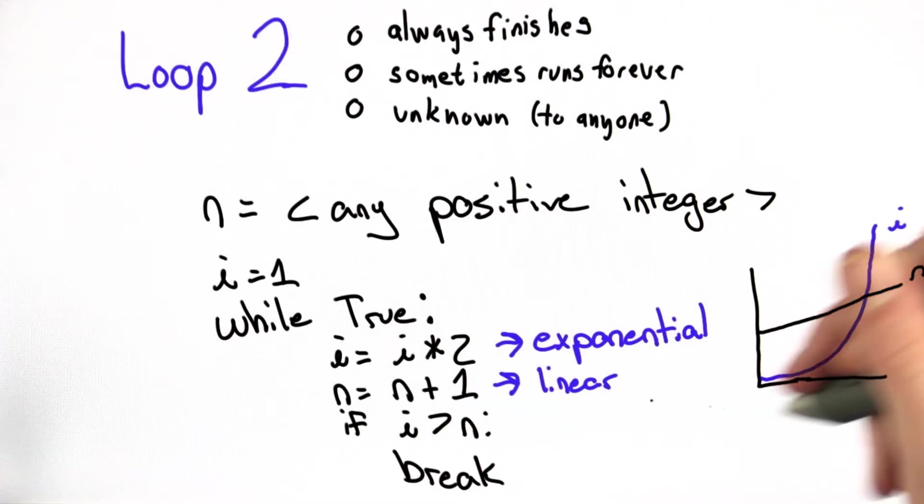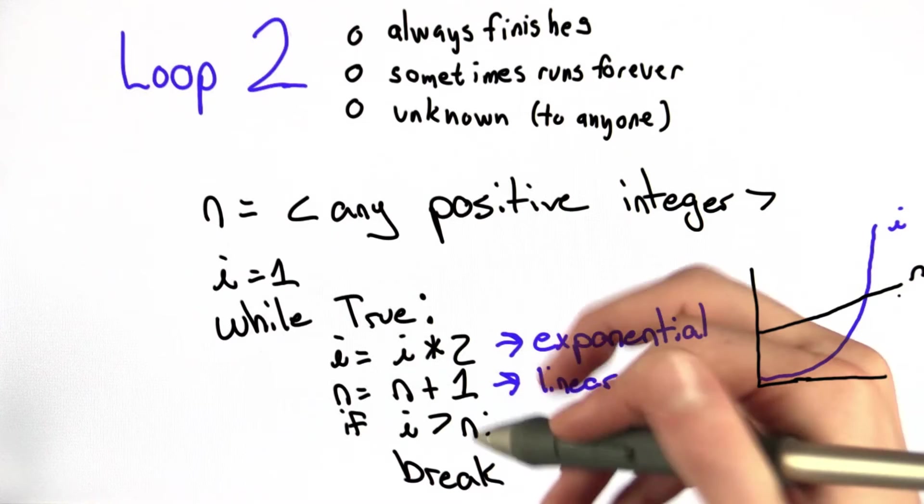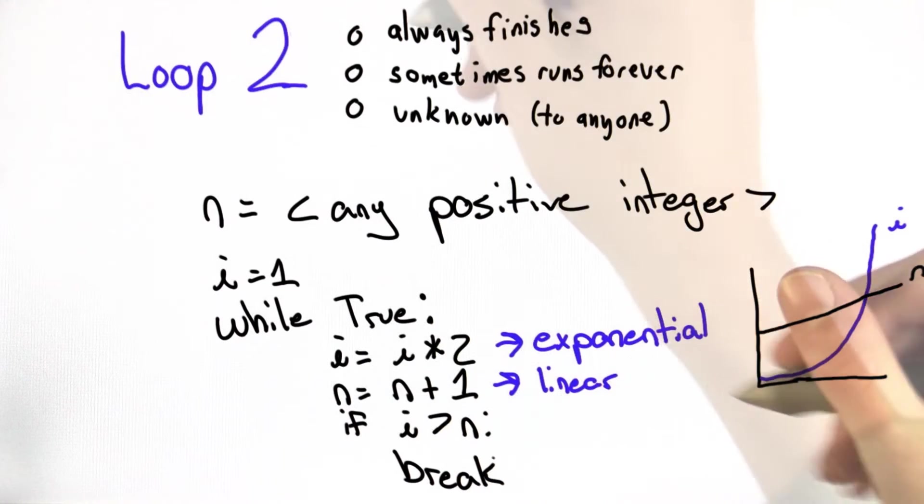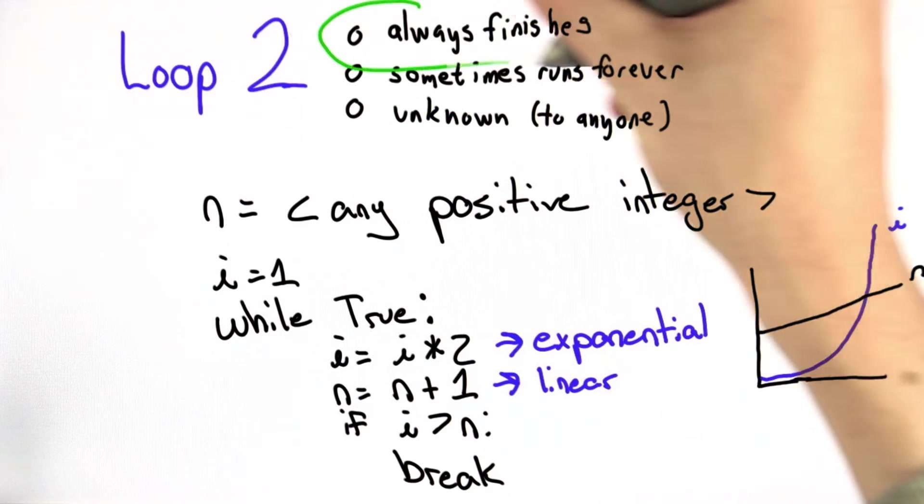Considering that eventually i is going to be greater than n, we know that we will eventually break, which proves that loop 2 always finishes.